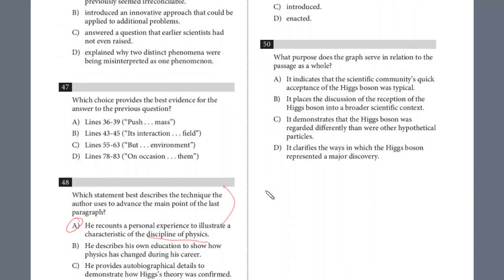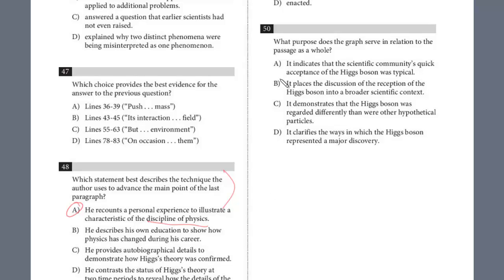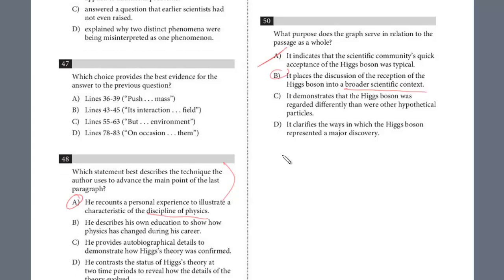And so what, let's take a look at the answer choices that help us out for 50. What purpose does the graph serve? It indicates the scientific community's quick acceptance of the Higgs boson was typical. We know it wasn't quick. It places the discussion of the reception of the Higgs boson into broader scientific context because those other particles are compared. This is definitely the choice.